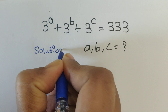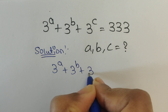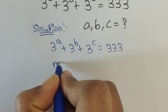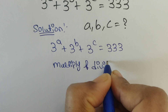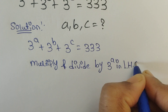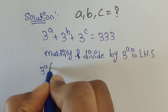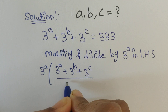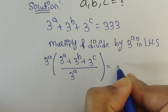Solution. We have given 3 power a plus 3 power b plus 3 power c equal 3333. So first we will multiply and divide by 3 power a in LHS. So multiply and divide by 3 power a in LHS.